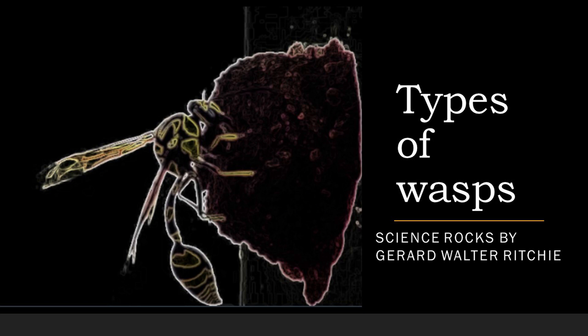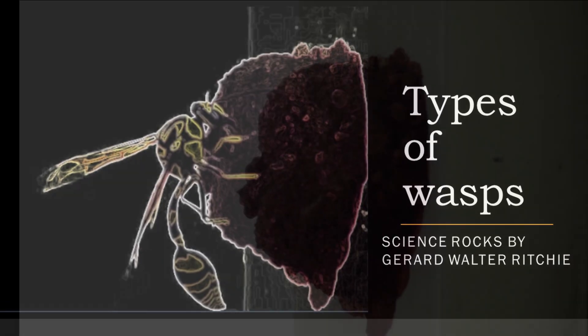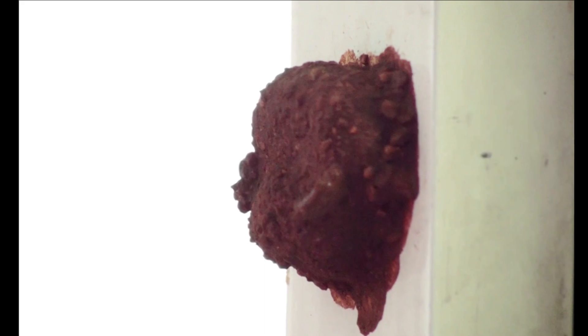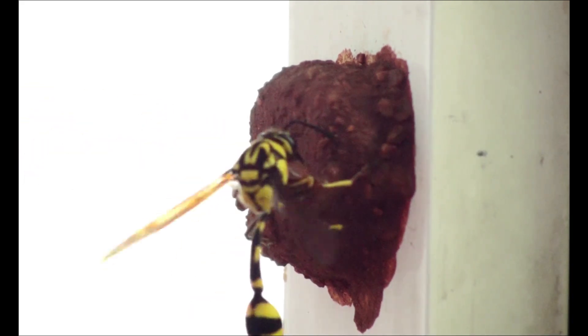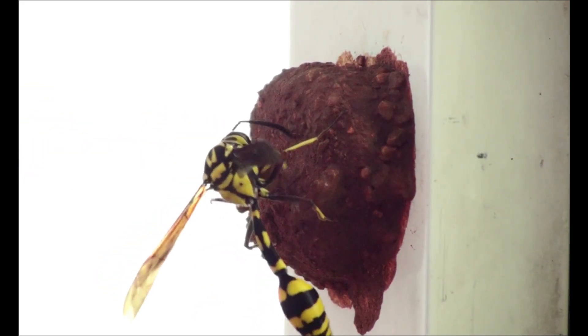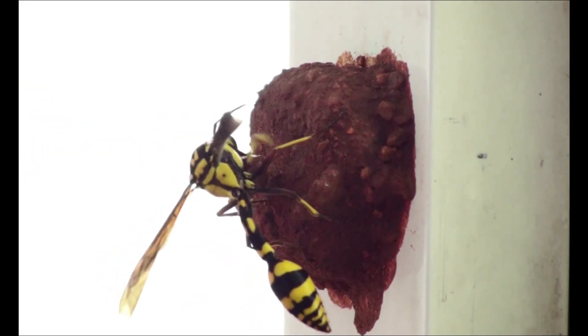A wasp is any insect having a narrow waist and belonging to the suborder Aprocytia. Wasps first appeared in the fossil record in the Jurassic period.